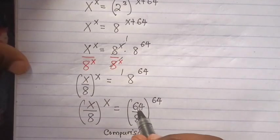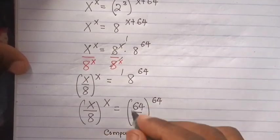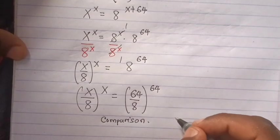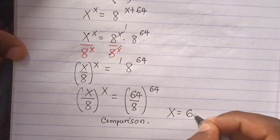And then x over 8 is x over 8. From here, when you compare, you get the value of x is equal to 64.